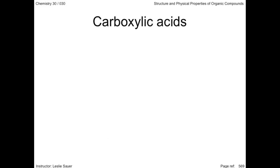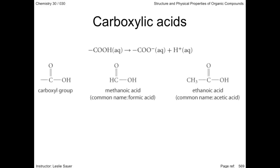A carboxylic acid is a compound containing a carboxyl group, which is a carbon attached to two oxygens and a hydrogen. It's called carboxylic acid because the carboxyl group in small-chain hydrocarbons partially ionizes in water, producing hydrogen ions and thereby having the same qualitative properties as weak acids.